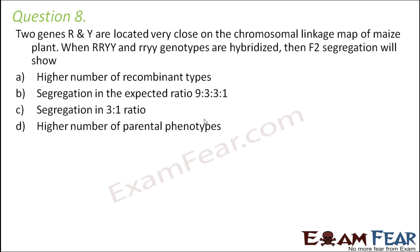Question number 8: Two genes R and Y are located very close on the chromosomal linkage map of a maize plant. When RRYY and rryy genotypes are hybridized, then F2 segregation will show: higher number of recombinant types; segregation in the expected ratio 9:3:3:1; segregation in 3:1 ratio; or higher number of parental phenotypes.